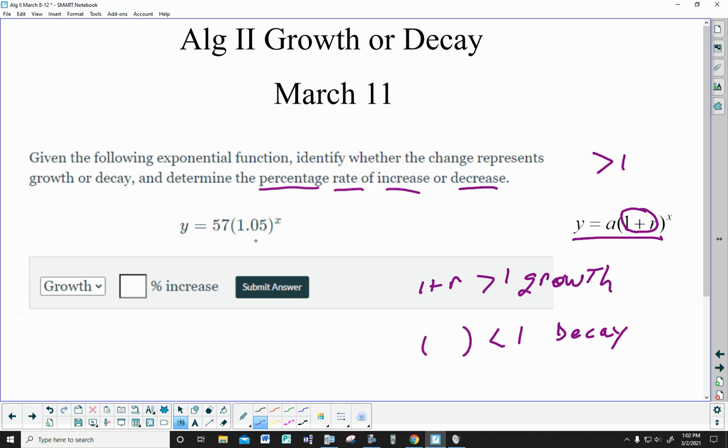So if this in here represents 1 plus the rate, you could be as fancy as going 1 plus the rate is equal to 1.05, and then subtract 1 from both sides and you get r is equal to 0.05. So the percent rate of increase, it's increased because the number inside is bigger than one. It's growth.